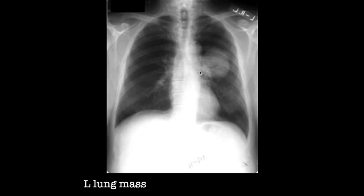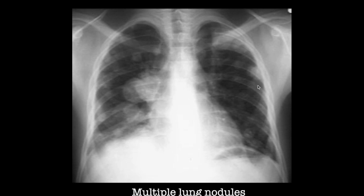Moving on, this is a mass — a large left lung mass centered near the hilum. This is a bronchogenic carcinoma. Here are multiple nodules. These large nodules are called coin and cannonball lesions, and these are typical of renal cell carcinoma, though not exclusively so. If you see them, you should try to exclude renal cell carcinoma as the likely diagnosis. These are metastases.